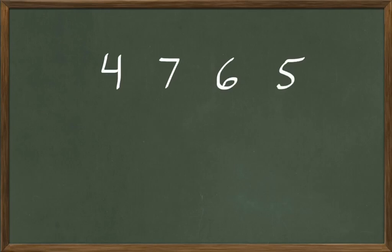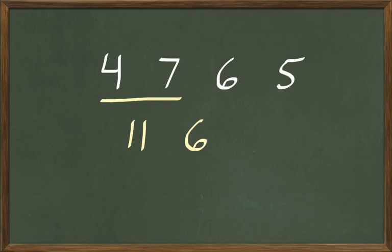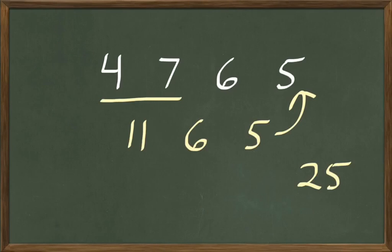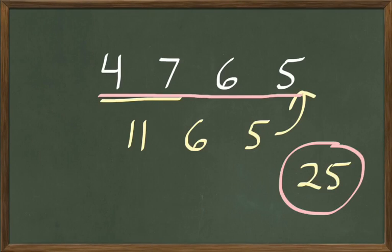The next one: how many are 4 and 7 less 6 multiplied by 5? We start out with adding: 4 and 7 are 11. Less 6: 11 less 6 are 5. And how many are 5 multiplied 5 times? 5 times 5 are 25. So 4 and 7 less 6 multiplied by 5 are 25.